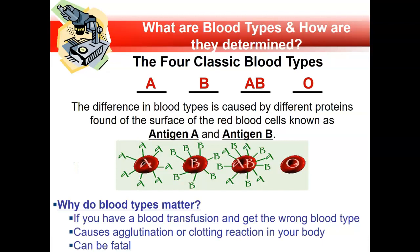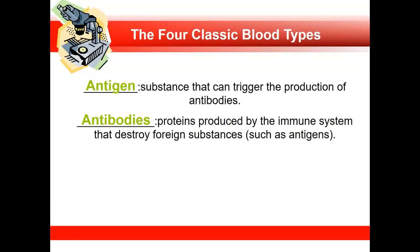Why does this matter? If you have a blood transfusion and you get the wrong blood type, you can have a transfusion reaction — agglutination or clotting in your body that spreads to every organ system, which can become fatal very fast. An antigen is a substance that can trigger the production of antibodies and is located on the cell surface. Antibodies are circulating in your bloodstream, produced by the immune system, and their job is to destroy foreign substances.